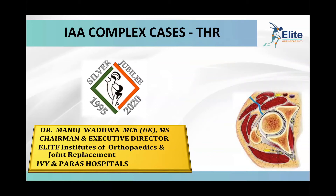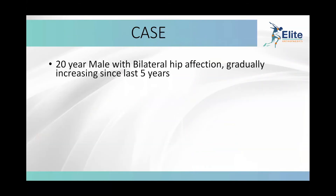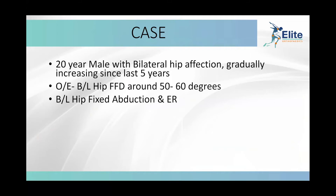The first case is a 20-year-old male with bilateral hip affection, gradually increasing since the last five years. On examination, bilateral hip fixed flexion contractures of 50 to 60 degrees, bilateral hip affection with restricted abduction and external rotation.